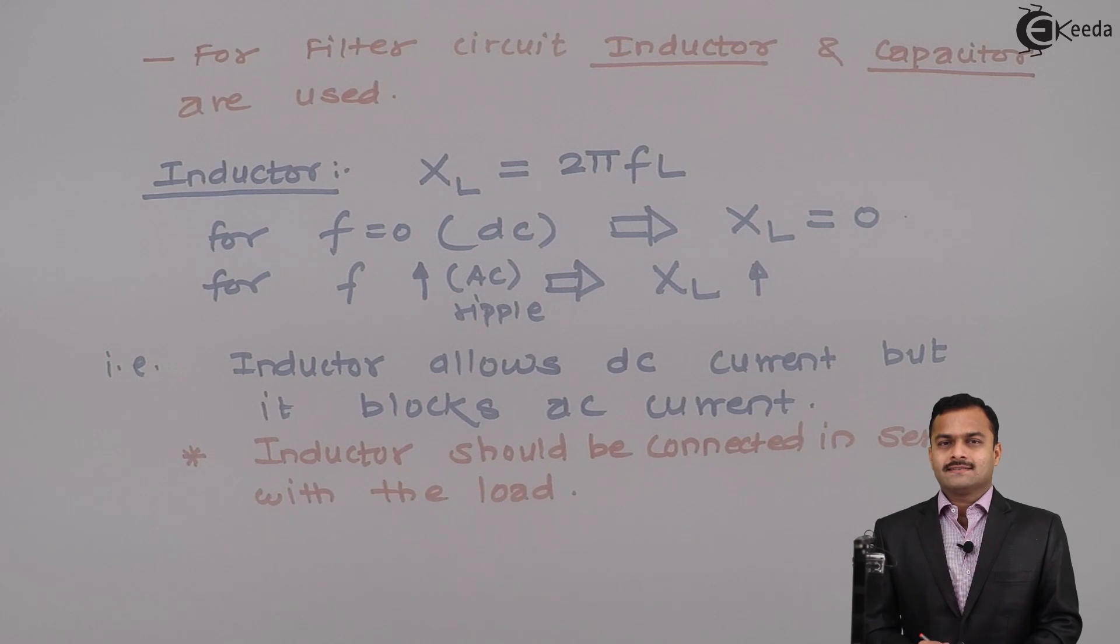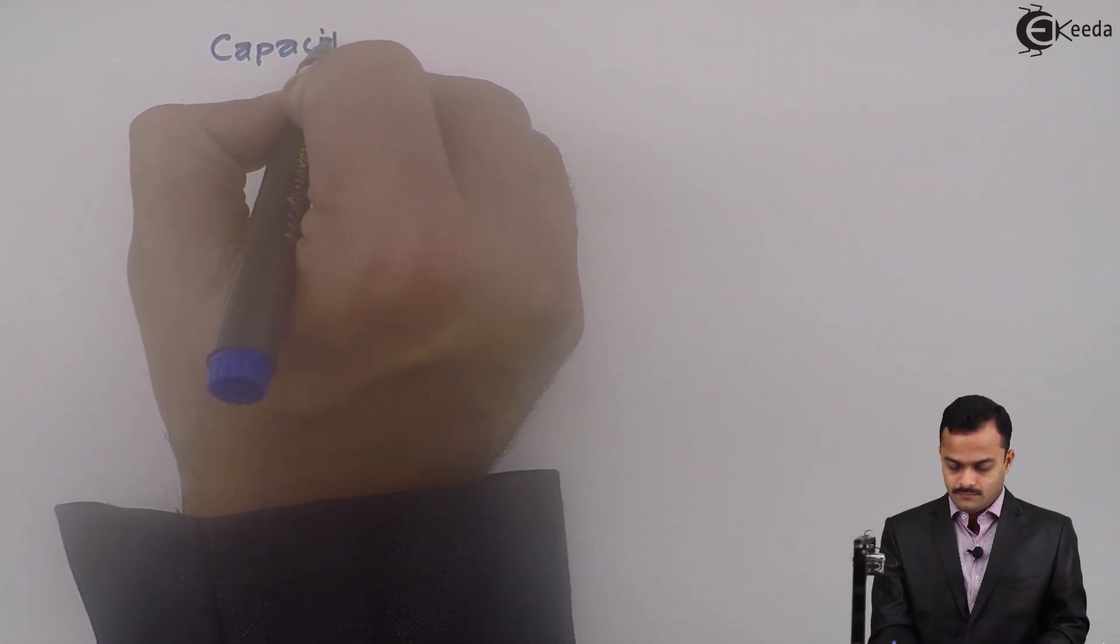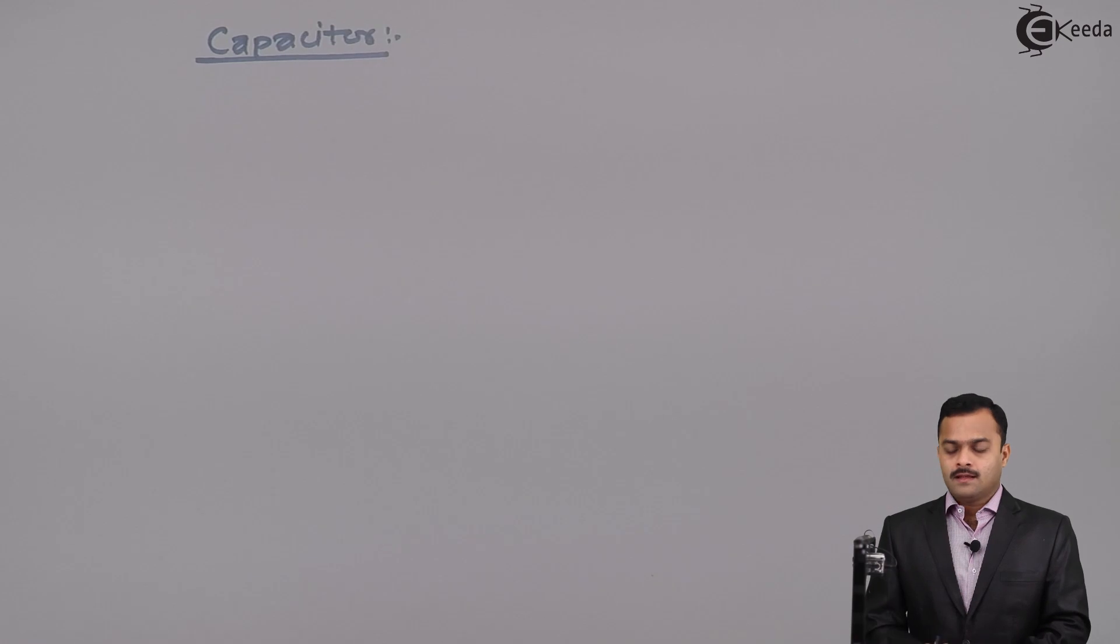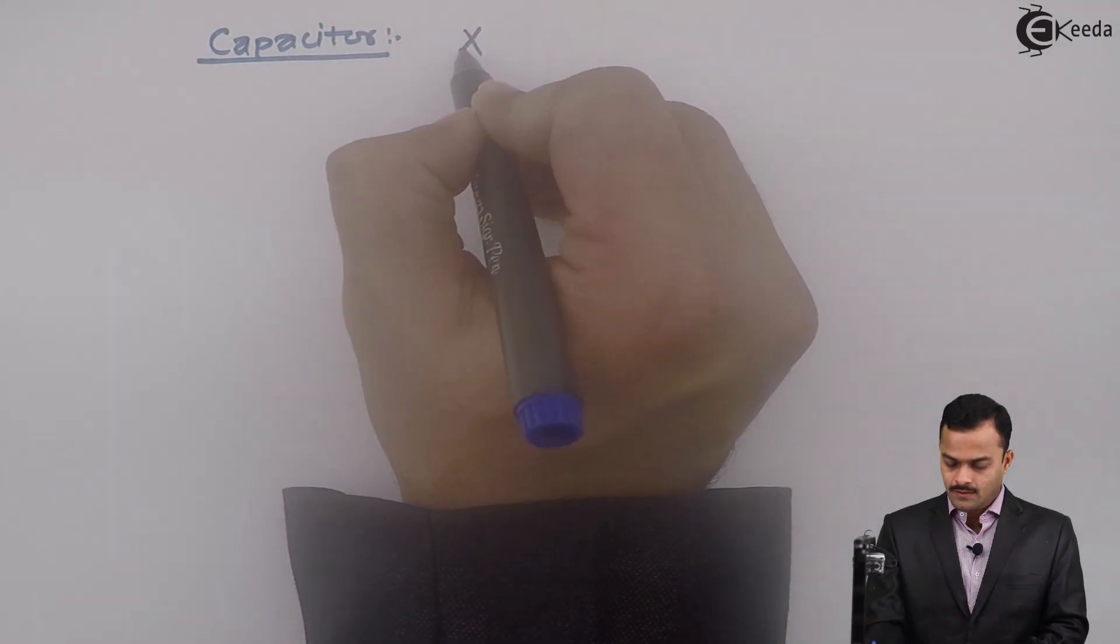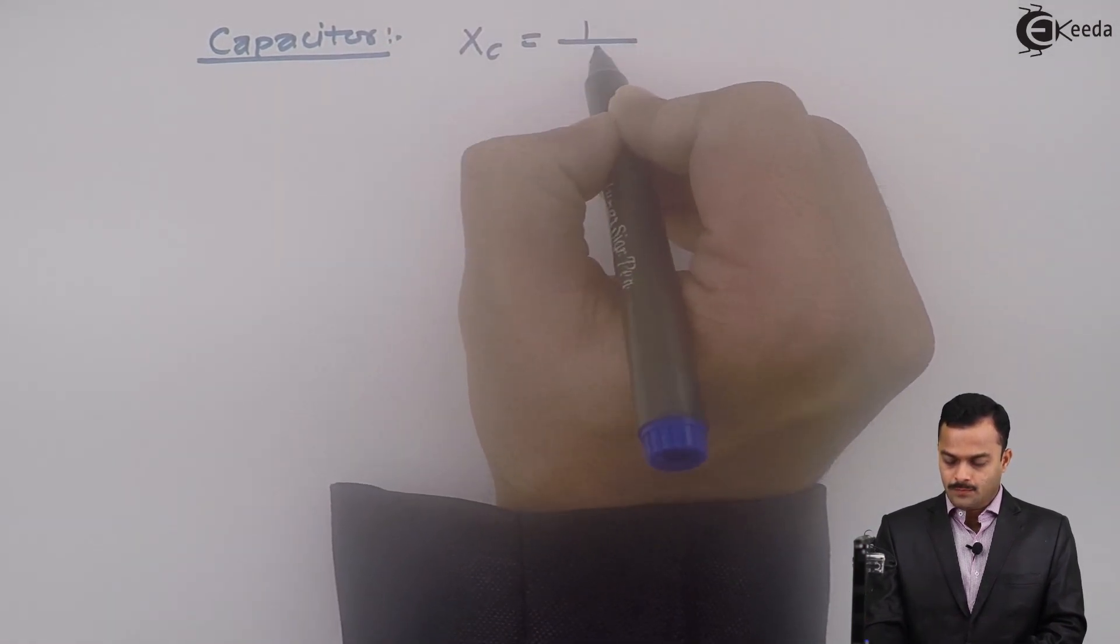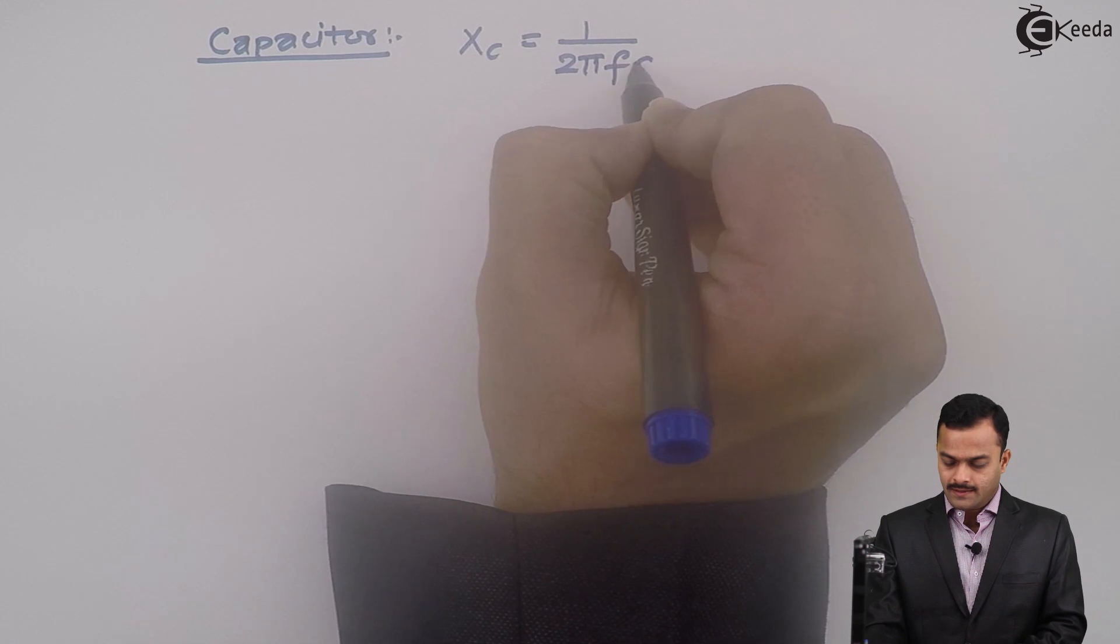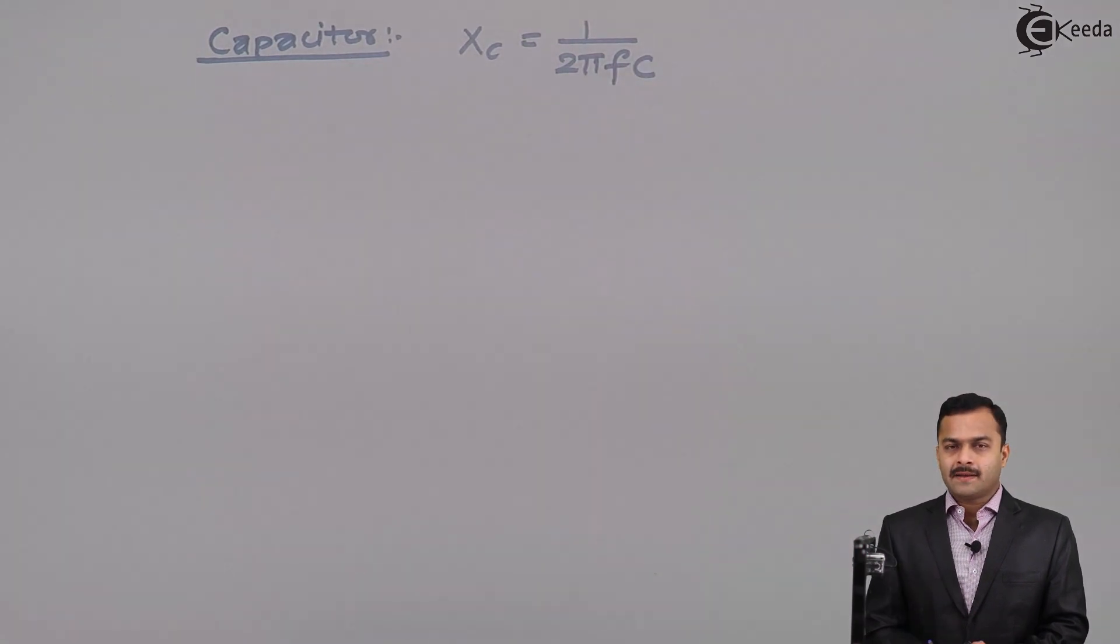What I can say is inductor should be connected in series with the load. That is called as inductor filter. A simple concept. Let us go to capacitor filter. In a capacitor, the resistance offered to the flow of current is given as XC equal to 1 upon 2πFC. It is called as capacitive reactance. Unit is same as the resistance that is ohm.